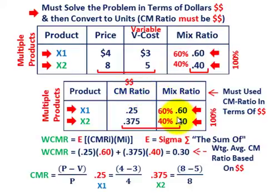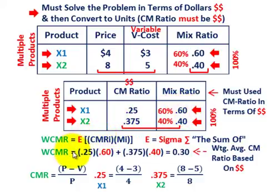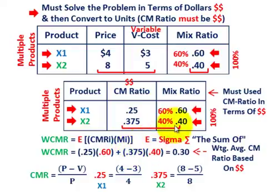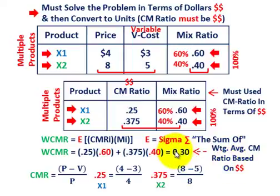Knowing the mix ratio and individual CMRs for each product, we can compute the weighted contribution margin ratio. It's the sum (sigma) of each product's CMR times its mix ratio. For X1: 0.25 × 0.60. For X2: 0.375 × 0.40. Summing those gives a weighted average contribution margin ratio of 0.30, based on dollar amounts — and this is what we'll use to solve for quantities in dollars.